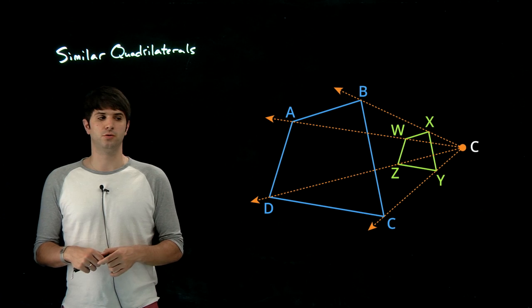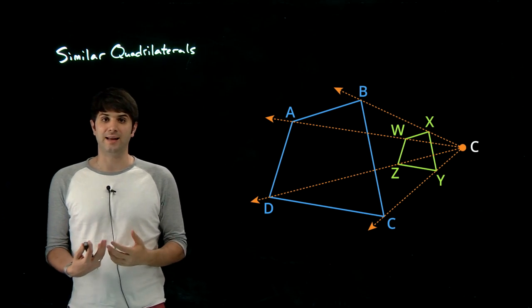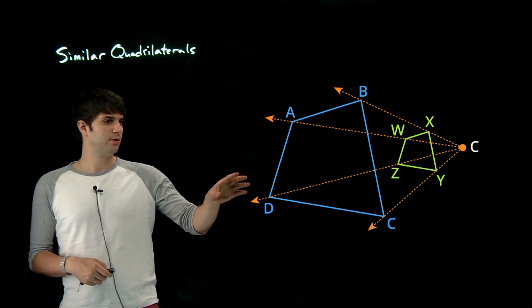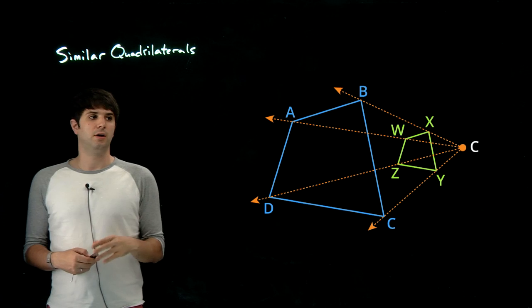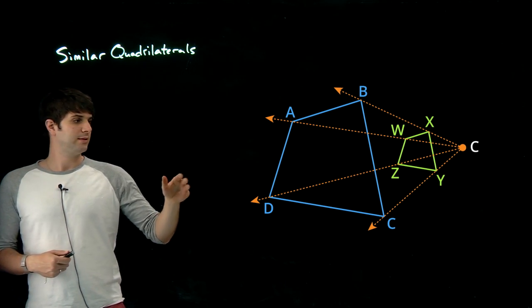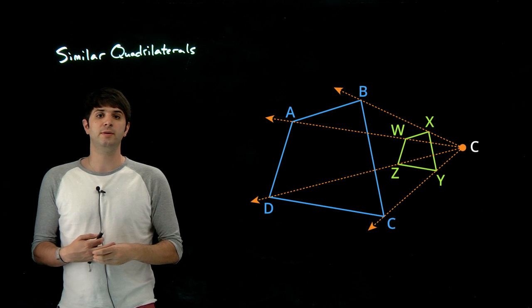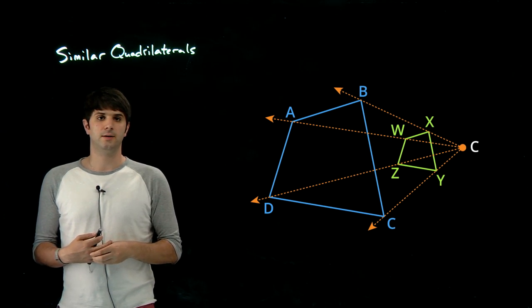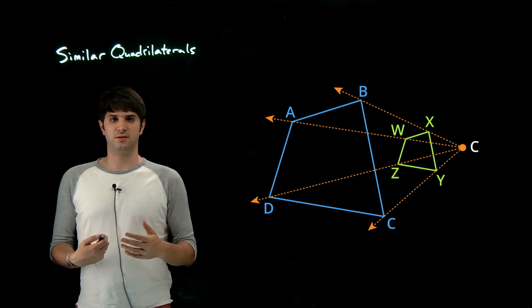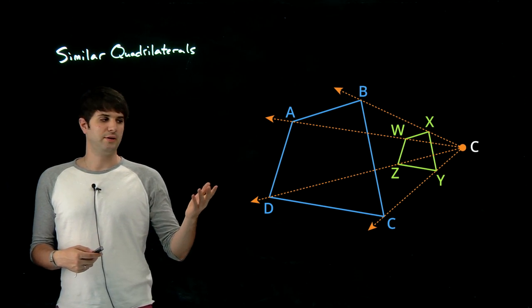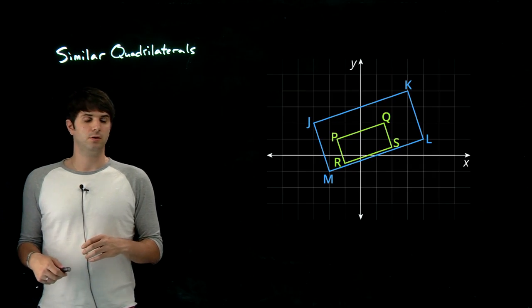So here we have two quadrilaterals. This is a dilation. Quadrilateral ABCD and quadrilateral WXYZ come from point C over there. These will be similar because they fit the definition of similarity, meaning the angles are all congruent and the side lengths are proportional.